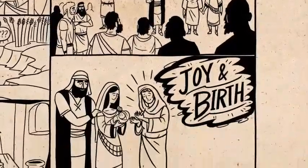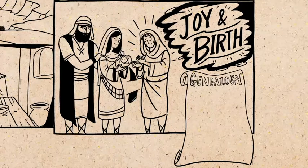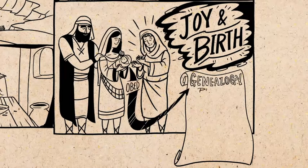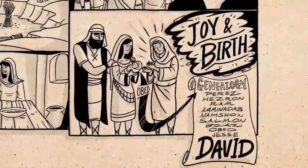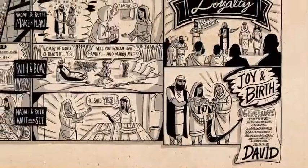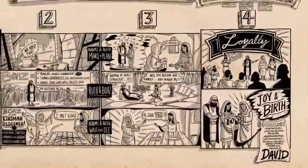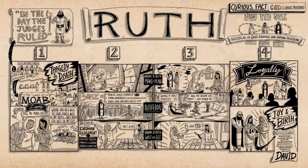The book of Ruth concludes with a genealogy showing how Boaz and Ruth's son, Oved, was the grandfather of King David, from whom came the lineage of the Messiah. All of a sudden, these seemingly mundane, ordinary events in this story are woven into God's grand story of redemption for the whole world. The book of Ruth invites us to consider how God might be at work in the very ordinary, mundane details of our lives as well. And that's what the book of Ruth is all about.